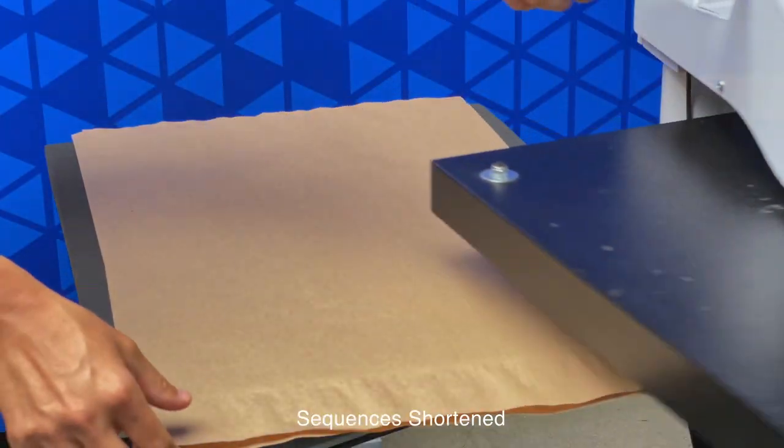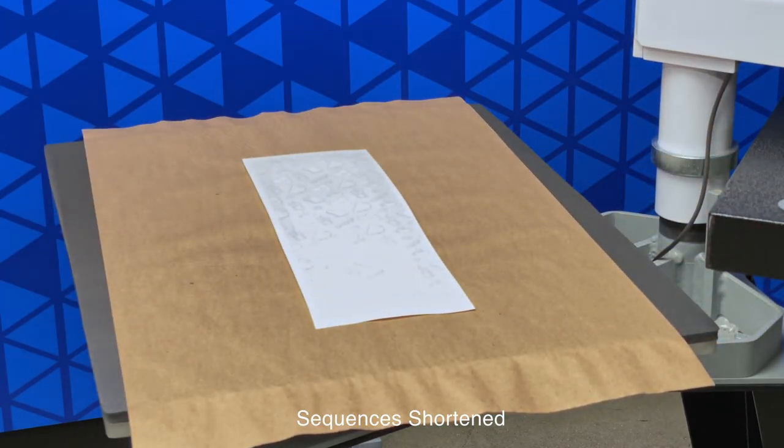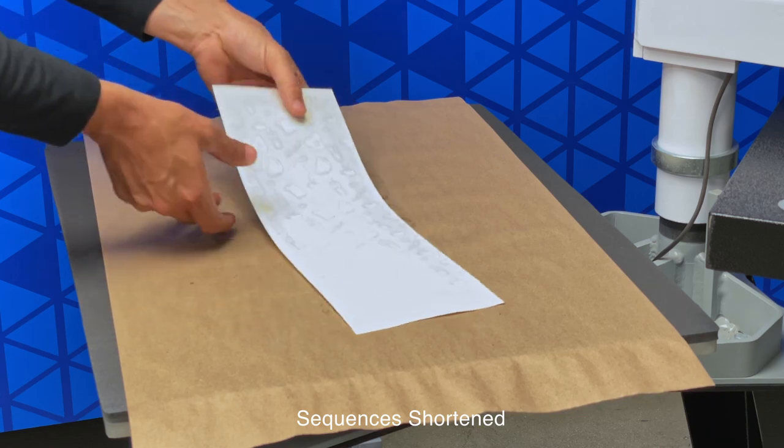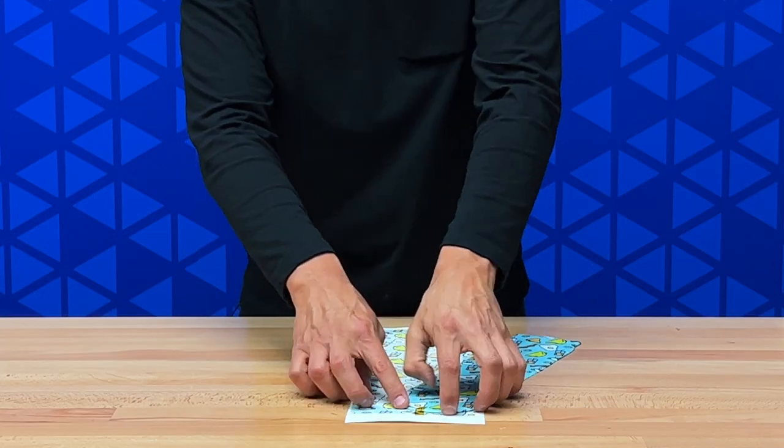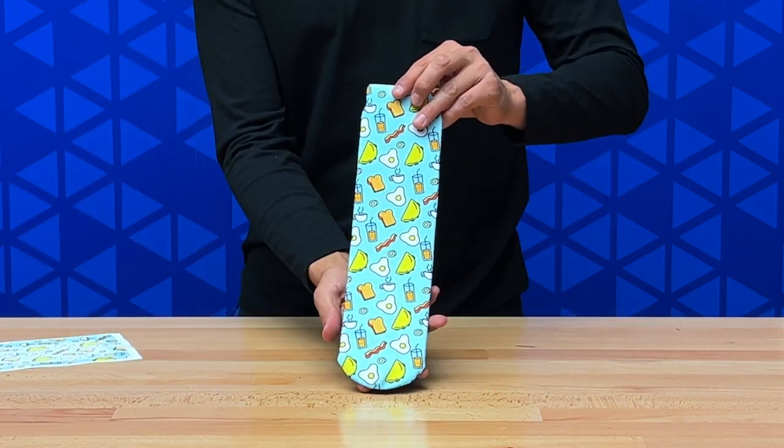Once the press is done, open it slowly. We'll remove our craft paper and let's set this off to the side. So now we just need to remove the heat transfer tape. And we're done.